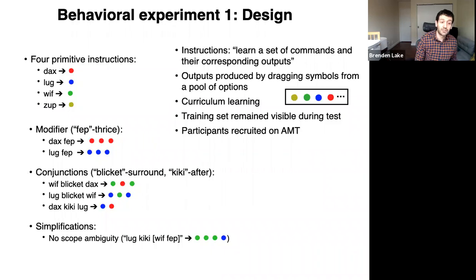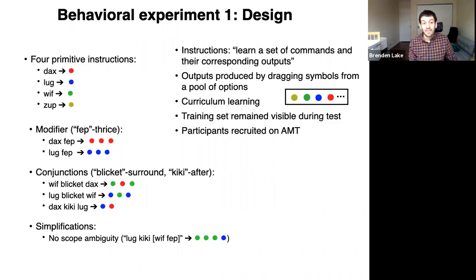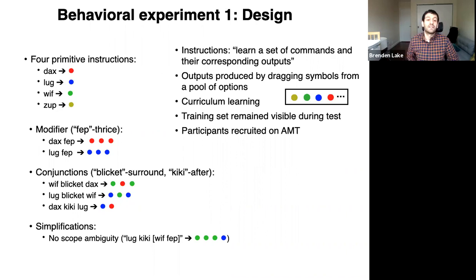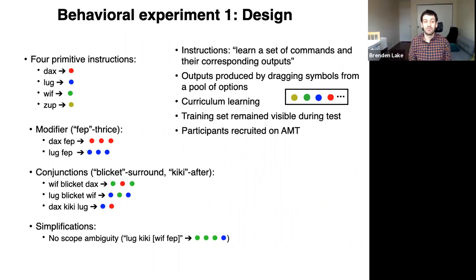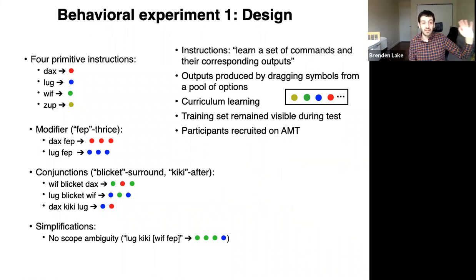Here's the design of the behavioral experiment. There are four primitives, a modifier FEP which is a bit like 'thrice' — so DAX FEP means DAX, DAX, DAX — BLICKET as a surround function, and KIKI as a conjunction meaning 'after.' When you DAX KIKI LUG, you first do LUG (blue) and then DAX (red). These can be composed together. Participants were taught each function individually and then taught to make compositions of functions. The training set remained on screen. This was run on Mechanical Turk.